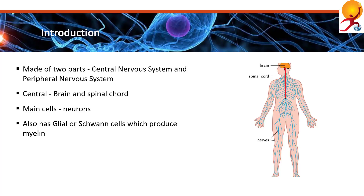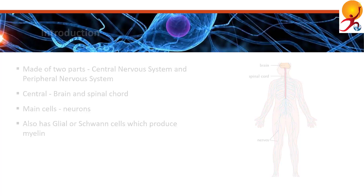One common example of glial cells are the so-called Schwann cells, which produce the myelin sheath of the peripheral nervous system.